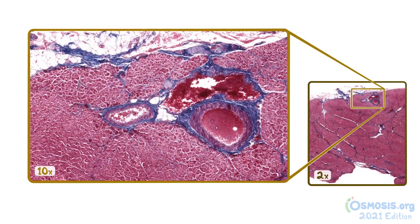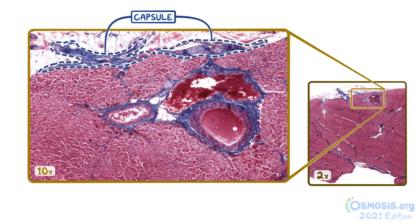The pancreas has a thin collagenous capsule that surrounds the entire pancreas, although only portions of it can be seen in this image. The capsule also extends into the pancreas as septa, forming lobules.